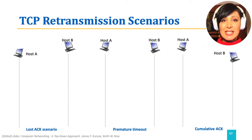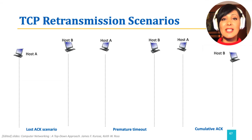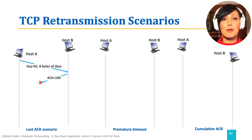Let's review a few TCP retransmission scenarios with the simplified sender behavior we just discussed. The first scenario we will consider is the lost ACK scenario. Let's assume we are sending a segment with sequence number 92 and 8 bytes of data from host A to host B.